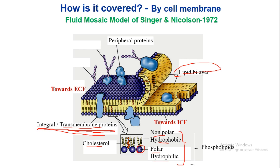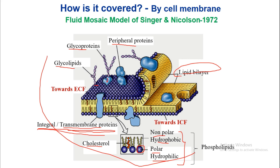These are the peripheral proteins, present only on the outer surface of the cell membrane. These are glycoproteins — a carbohydrate moiety attached to a protein structure. These are glycolipids — when a carbohydrate moiety is attached to a lipid structure, it is known as glycolipids. The most important thing is that the cell membrane is a lipid bilayer structure.